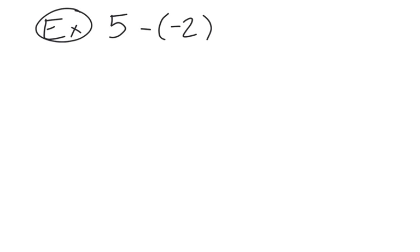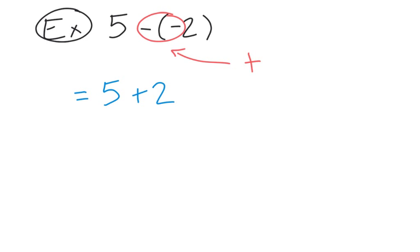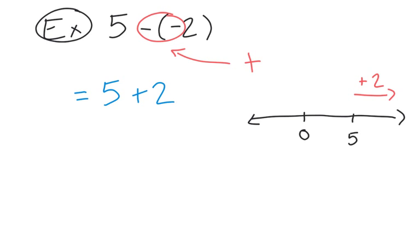In our last two examples, we're going to look at scenarios which include more negative signs. We have five subtract negative two. The first thing you want to do is simplify these signs — when you have two negative signs beside each other, that actually simplifies into a positive sign. So let's rewrite our question as five plus two. On the number line, you start at positive five, you're adding two, so you're going further to the right. If you count out two spaces, you will end up at positive seven — making our final answer positive seven.